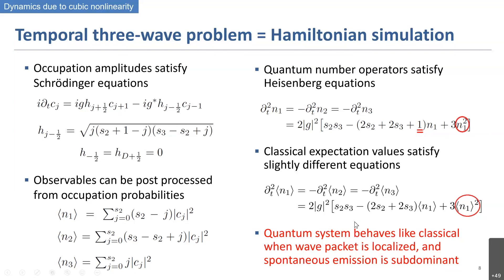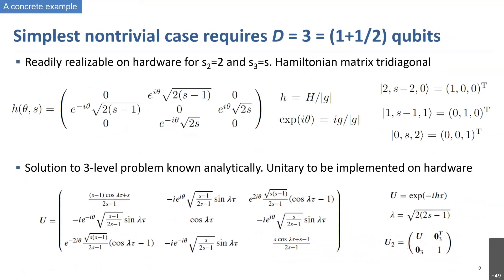This tells us under what conditions the quantum system behaves classically: when the wave packet is localized so quantum states satisfy a Poisson distribution, and when spontaneous emission is subdominant. When these two conditions are satisfied, quantum and classical systems behave similarly. Now let's see how to solve an example of the quantum problem. The simplest case requires three levels — one plus a half qubit — and the Hamiltonian in normalized form can be exponentiated analytically to find the unitary dynamics, which I call the cubic gate U.